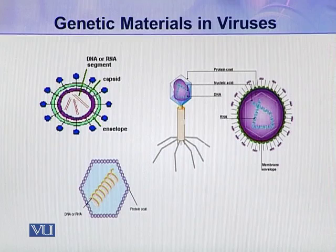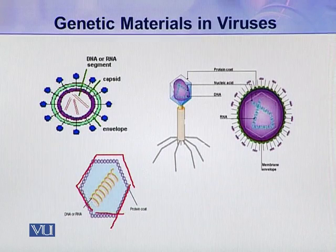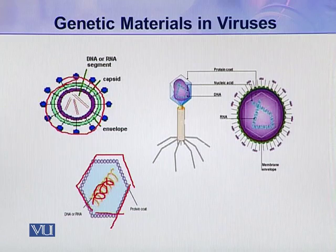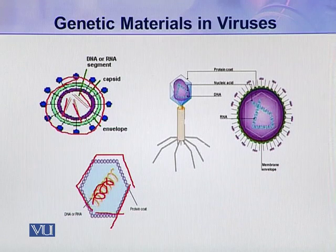Here you can see different types of viruses. In this virus, this is a protein coat, and inside this protein coat a single molecule of DNA or RNA is present. If you see this other virus, there is a protein coat and inside the protein coat there are two or three segments of DNA or RNA.